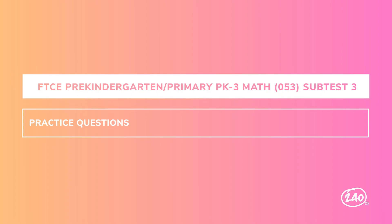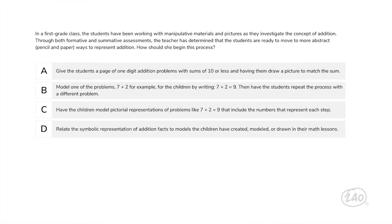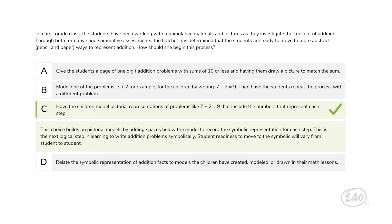Remember in mathematics instruction when we talked about moving students through different stages of math education? In a first grade class, students have been working with manipulative materials and pictures as they investigate the concept of addition. Through both formative and summative assessments, the teacher has determined that students are ready to move to more abstract ways to represent addition. How should she begin this process? The best answer builds on pictorial models by adding spaces below the model to record the symbolic representation for each step — the next logical step in learning to write addition problems symbolically.